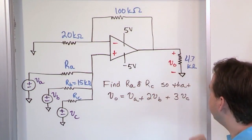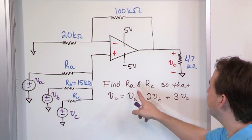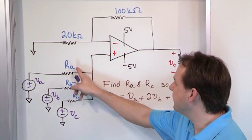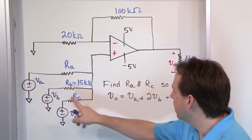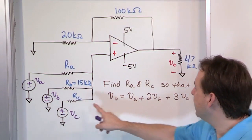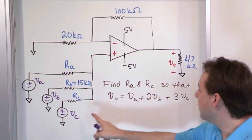And then we know the output voltage here. Now here's the tricky part. It says find the values of RA and RC, these resistor values, so that the output of this is VA plus 2 times VB plus 3 times VC.